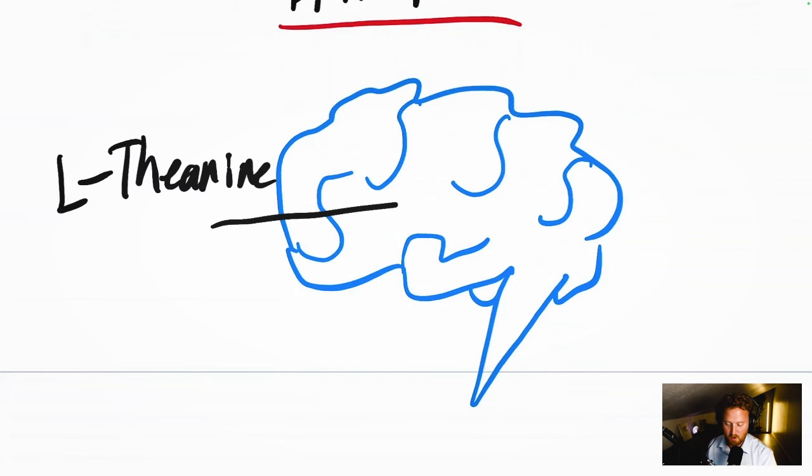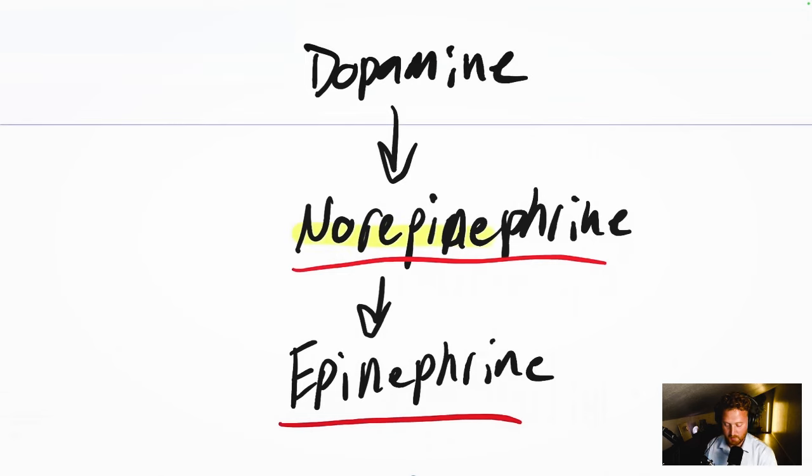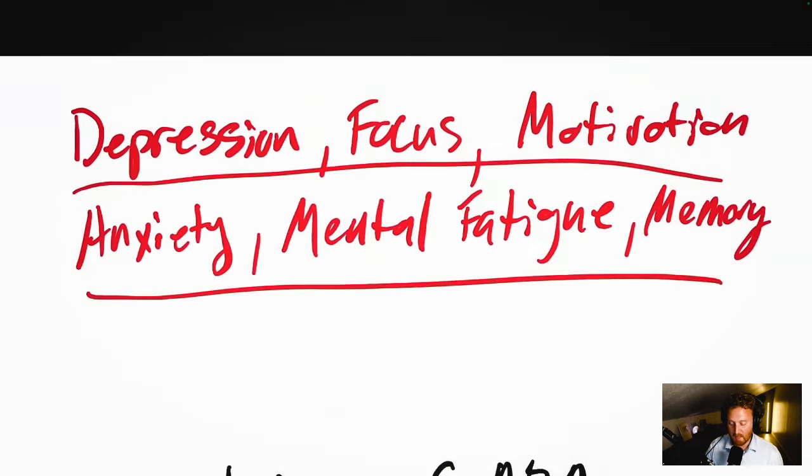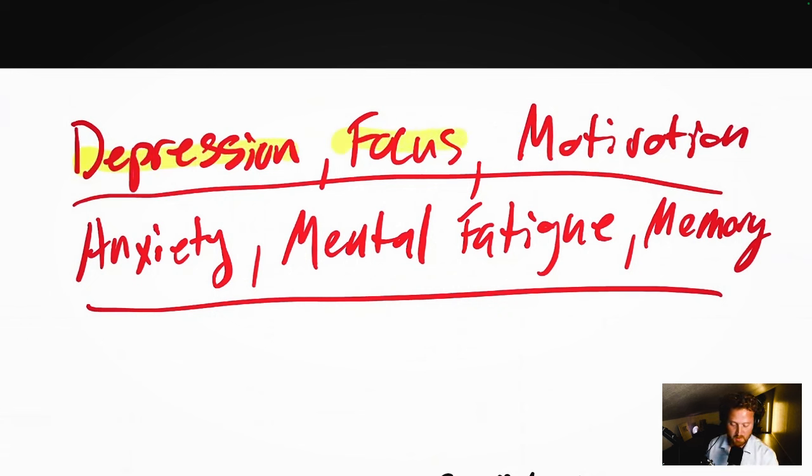Yes, L-theanine is very powerful and can impact norepinephrine, dopamine, serotonin, and GABA. And because it can help support that, it's going to help with depression, focus, motivation, anxiety, mental fatigue, and memory issues.